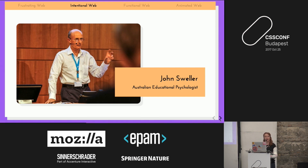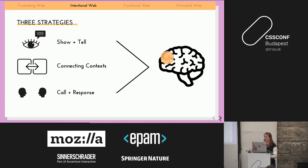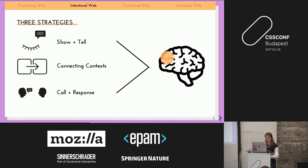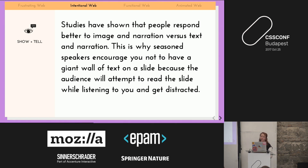Three of those strategies we can apply to the web are: show and tell, connecting context, and call and response. Studies have shown that people respond better to image and narration versus text and narration — which is why seasoned speakers encourage you not to have a giant wall of text on a slide, because the audience will try to read the slide while listening to you and get distracted.